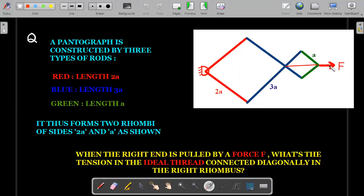So you can visualize that even if I pull this one to the right, if this is ideal unbreakable thread, then the pantograph will remain in static equilibrium. So the question is based on that. It forms two rhombi of sides 2a.